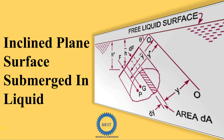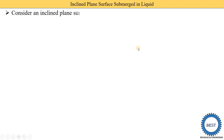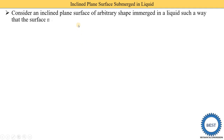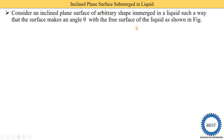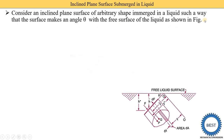In this video, we derive the equation of total pressure force and center of pressure for an inclined plane surface submerged in a liquid. We consider an inclined plane surface of arbitrary shape submerged in a liquid such that the surface makes an angle theta with the free surface of the liquid, as shown in the figure.